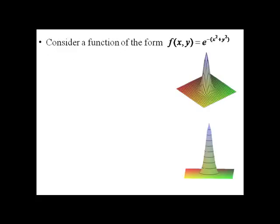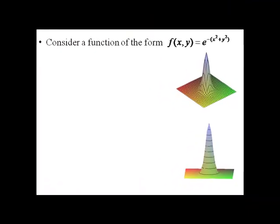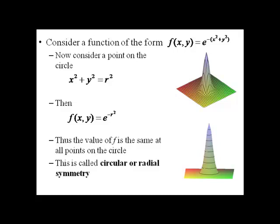So radial symmetry is best described by looking at a function that has it. Consider a function of the form f(x,y) = e^(-(x²+y²)). And you see it's graphed there on the right. We could actually rewrite this as e^(-r²). So radial symmetry is a graph that has the same function value at all points on that circle. And you'll recognize it because it'll have an x² + y² piece in it. This is known as circular or radial symmetry.